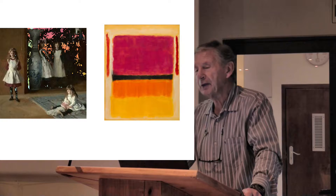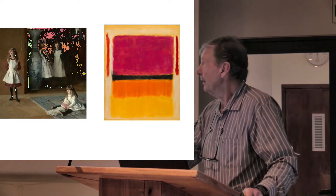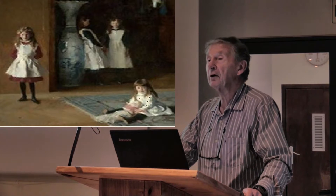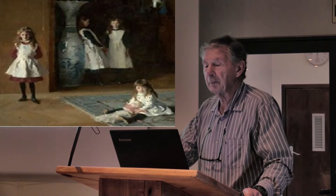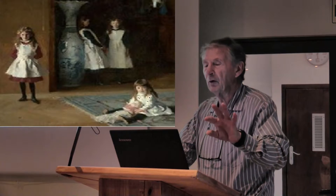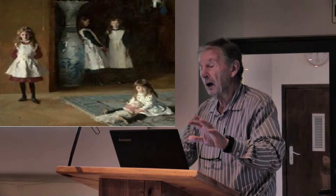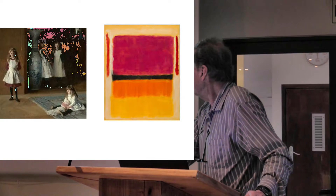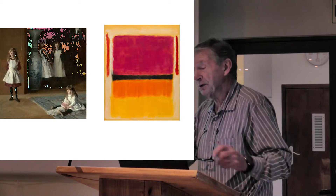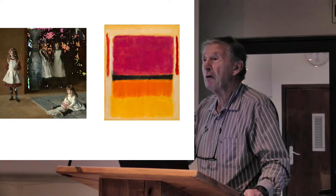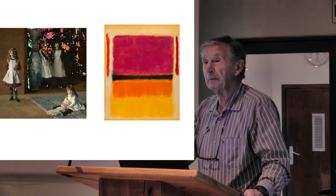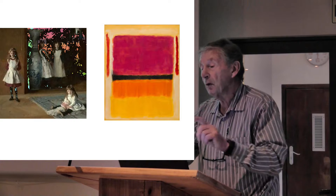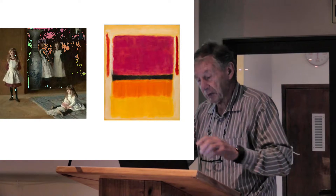Now if we start looking at the comparisons: on the left-hand side you have Sargent's Guilds — the classical period before modern art. On the right-hand side you have Mark Rothko's painting. His paintings — the one I'll show you just now — sold for 55 million dollars for a painting that looked very similar.